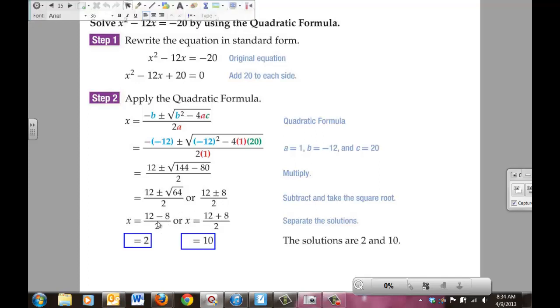From there, 12 - 8 is 4, 4 divided by 2 is 2. 12 + 8 is 20, 20 divided by 2 is 10. So using the quadratic formula, you can find the solutions of this quadratic equation are going to be 2 and 10. And while this is a fair bit of work, isn't it a lot easier than solving by graphing?